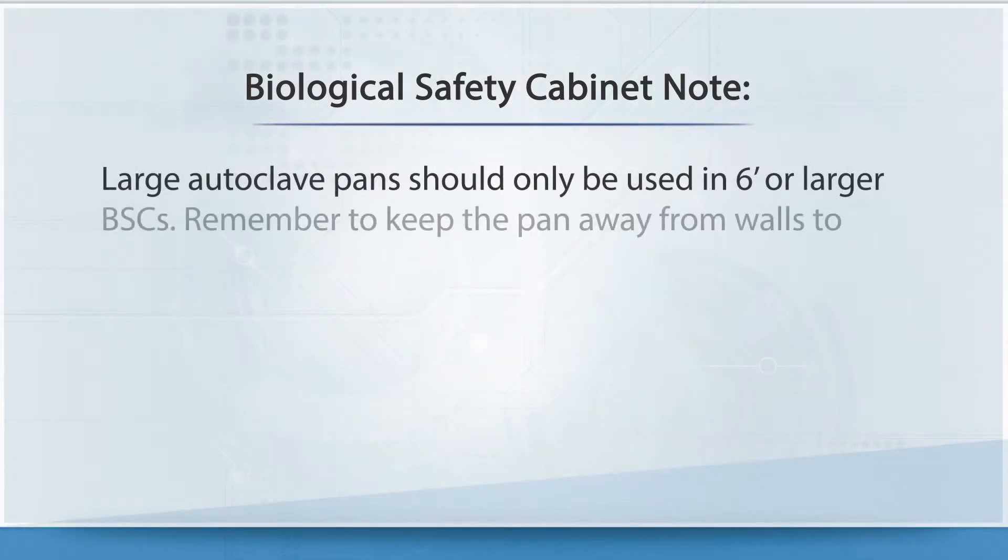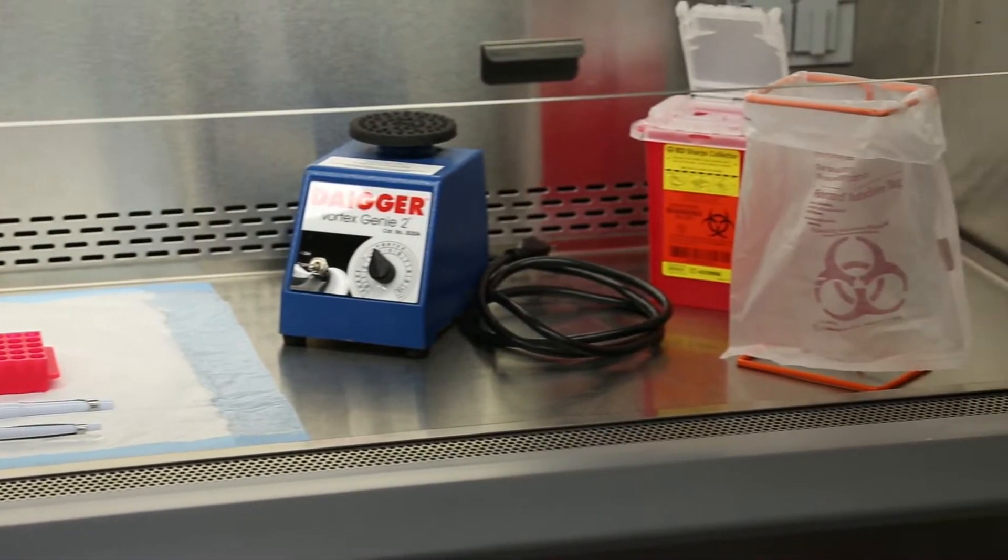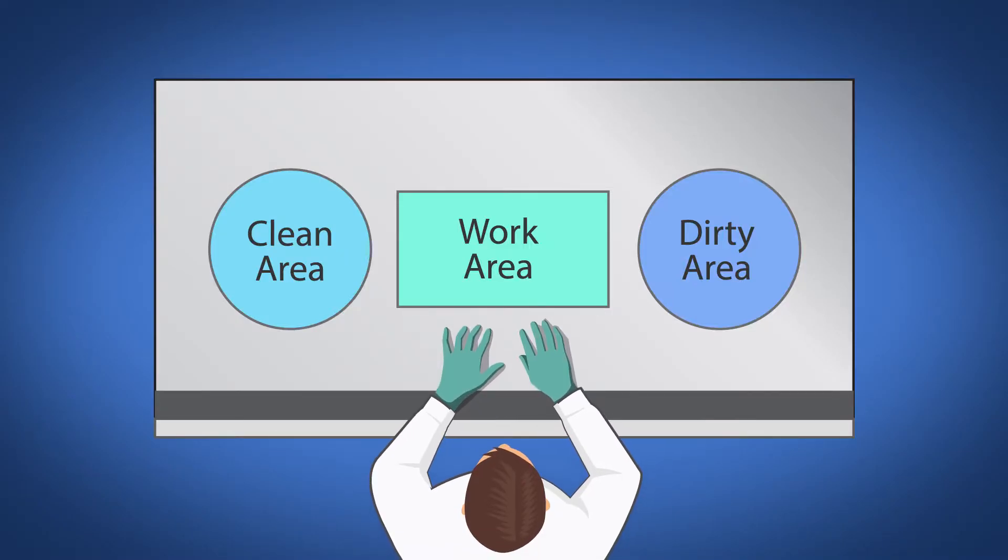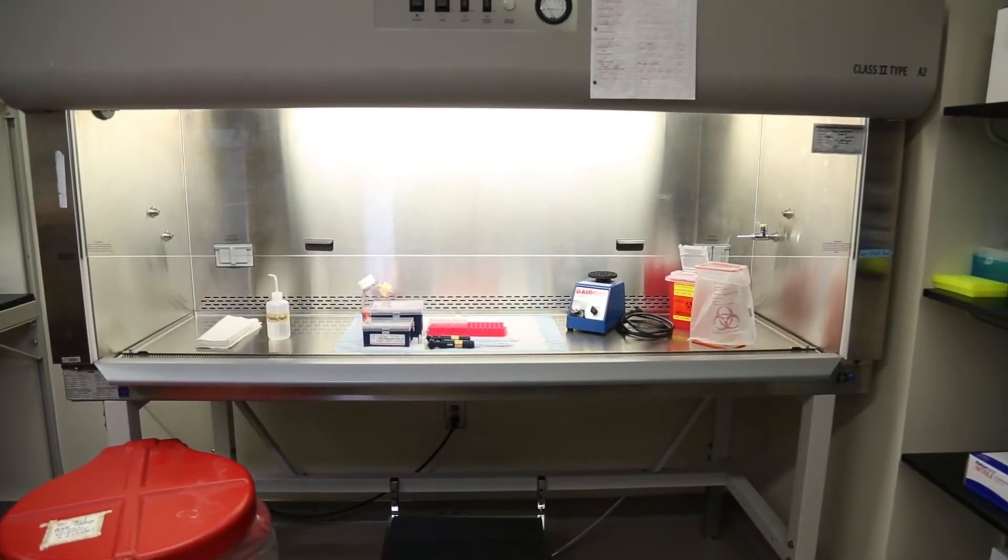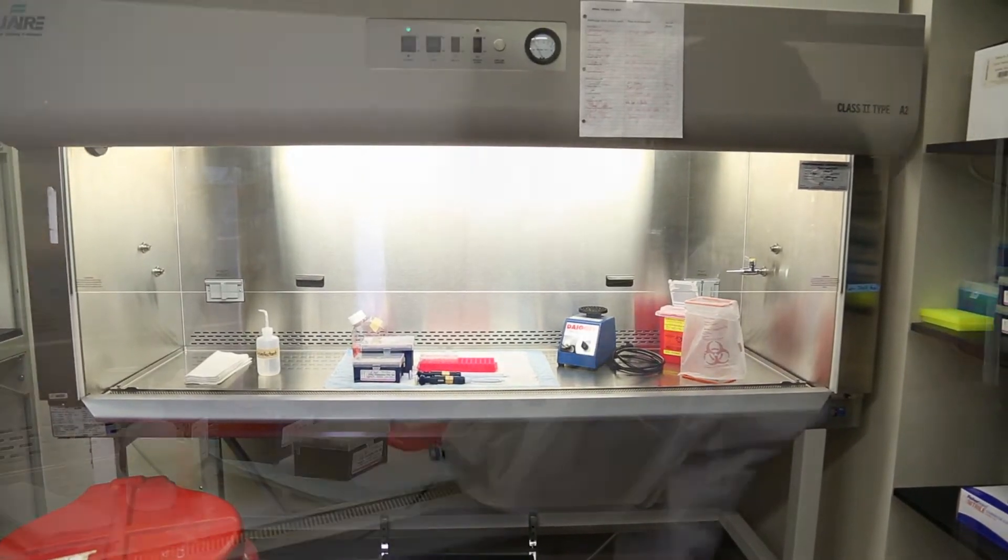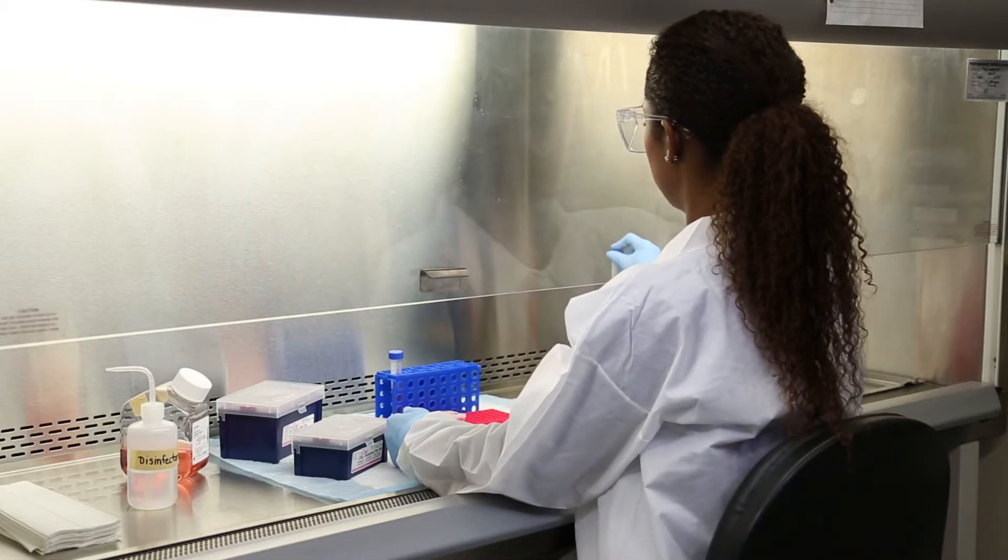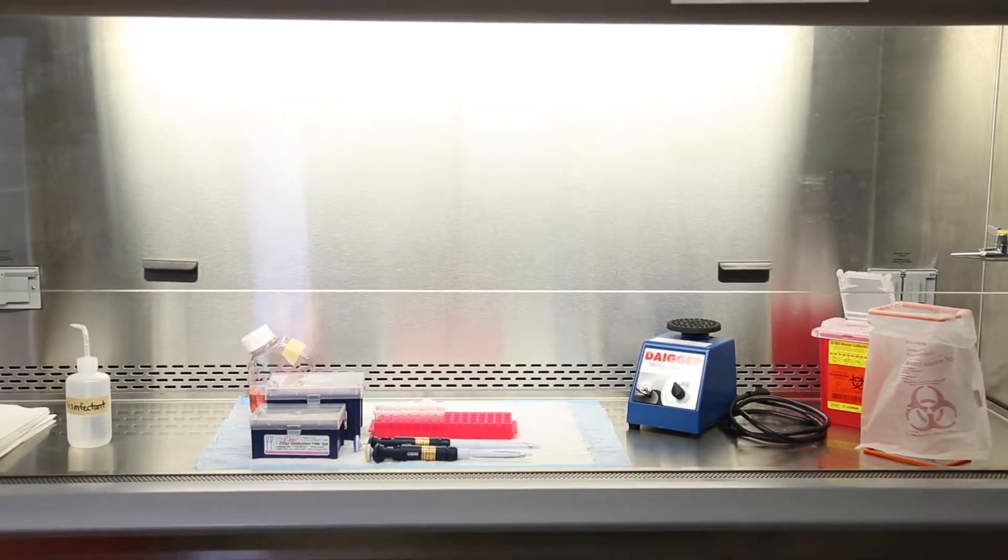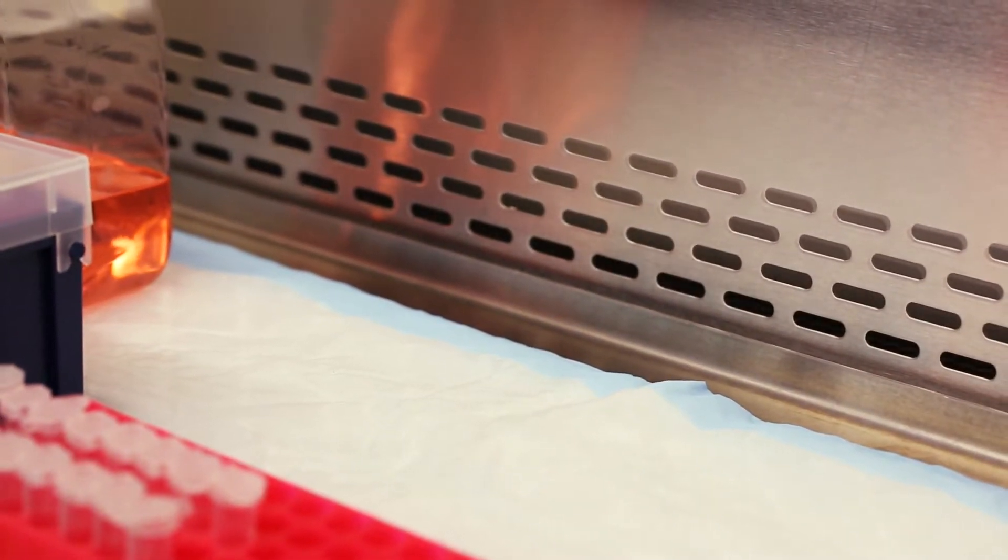Please note, large autoclave pans should only be used in six-foot or larger BSCs. For smaller BSCs, alternative biohazardous waste containers or bag stands should be used. Remember the clean-to-dirty principle and place clean materials on one side of the BSC and the biological waste and sharps container on the opposite or dirty side. In this video, we are demonstrating placement of materials for a right-handed person. Materials would be reversed for a left-handed person. Remember to keep the front and rear grills unobstructed to avoid disrupting the airflow in the BSC.